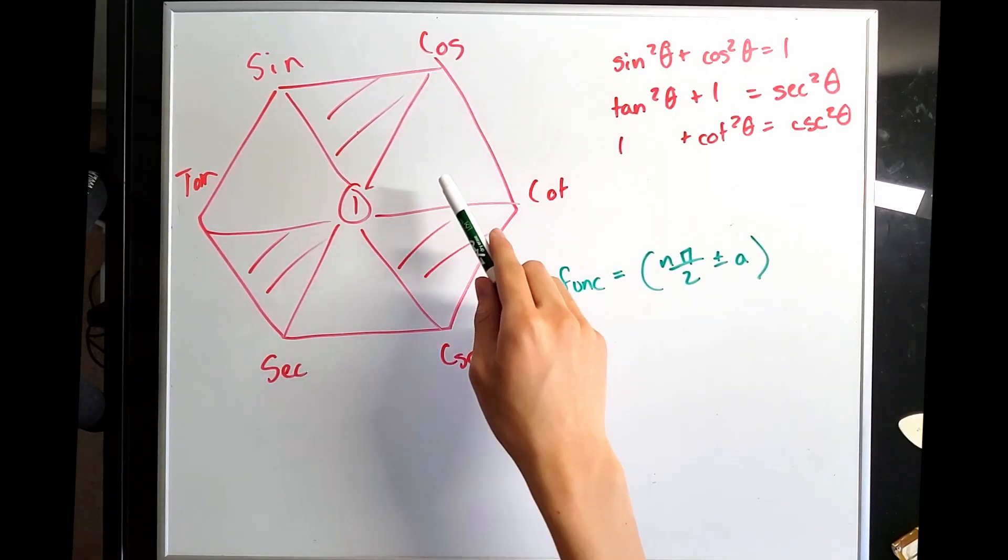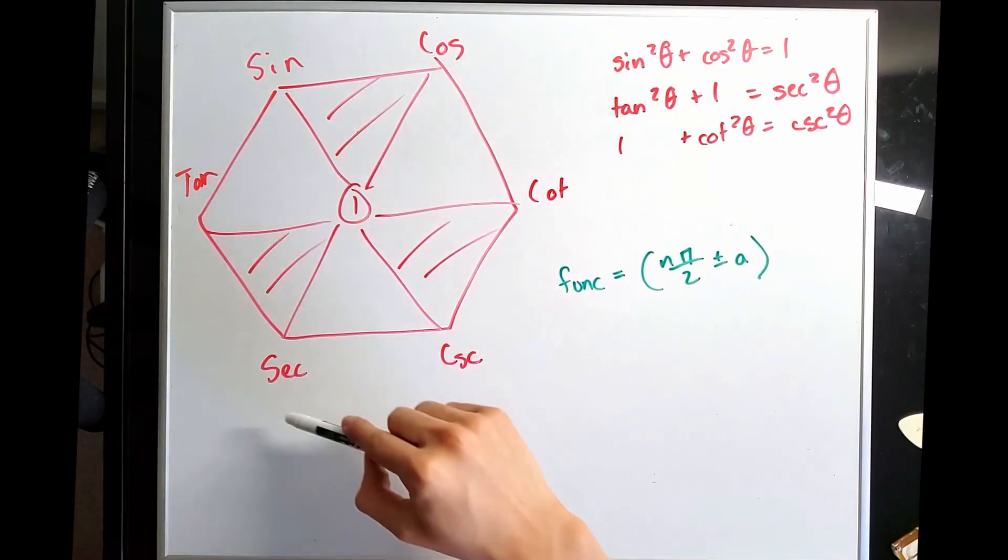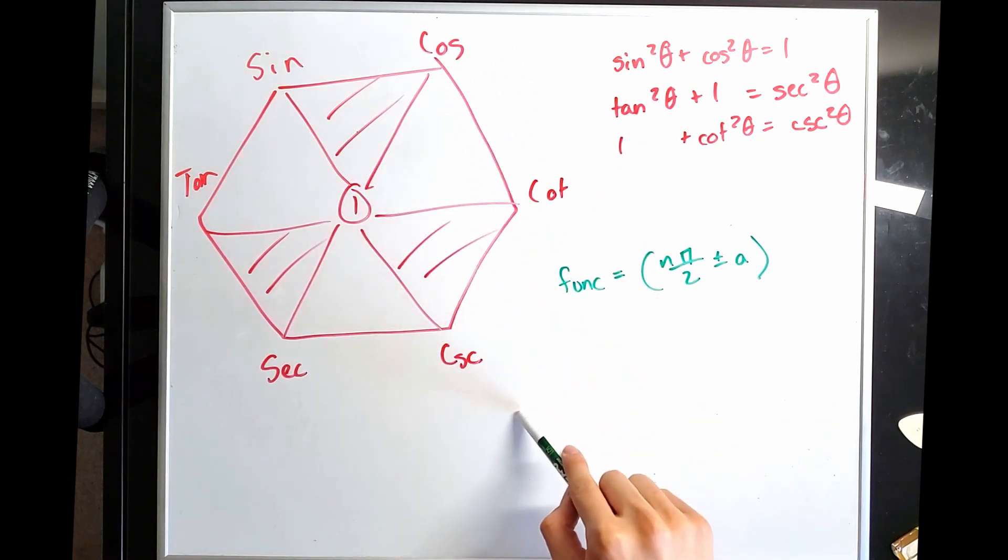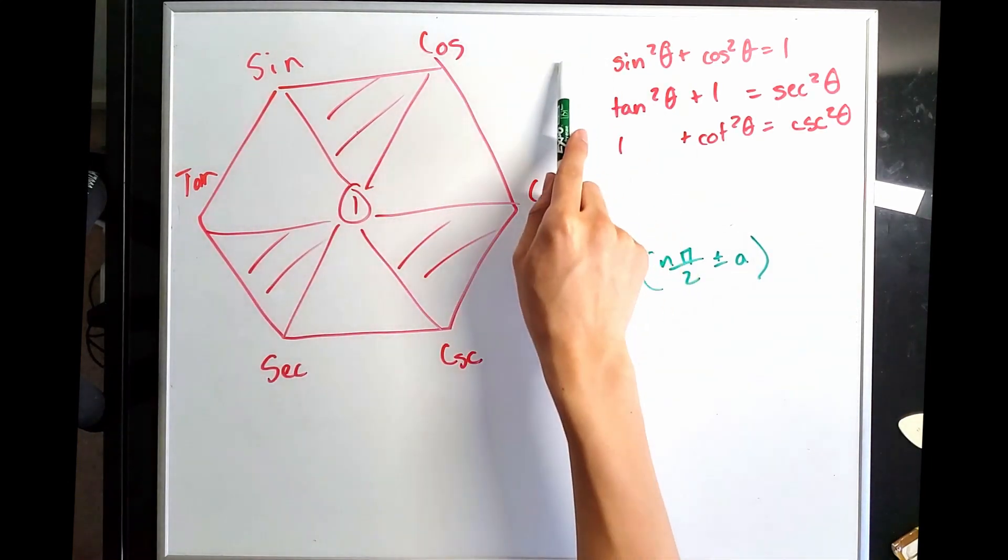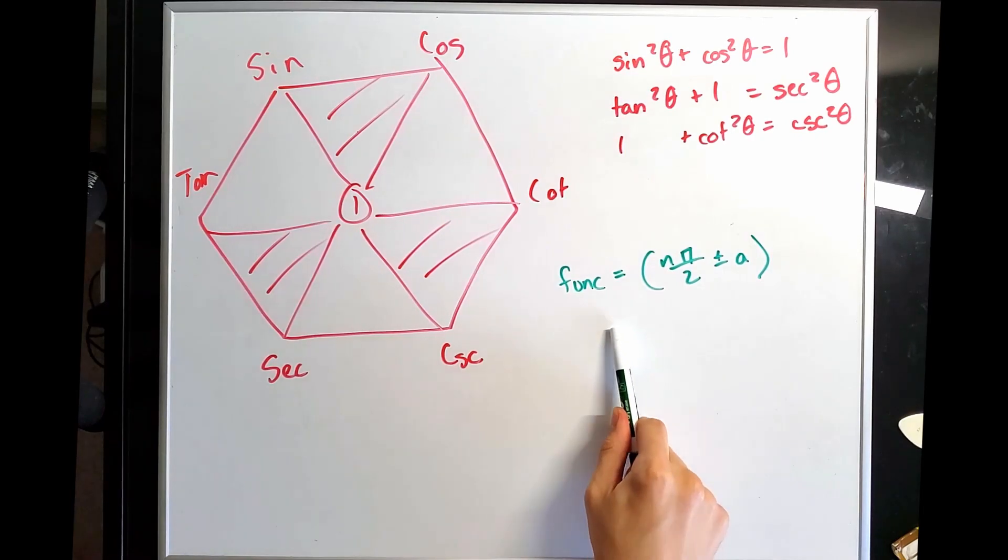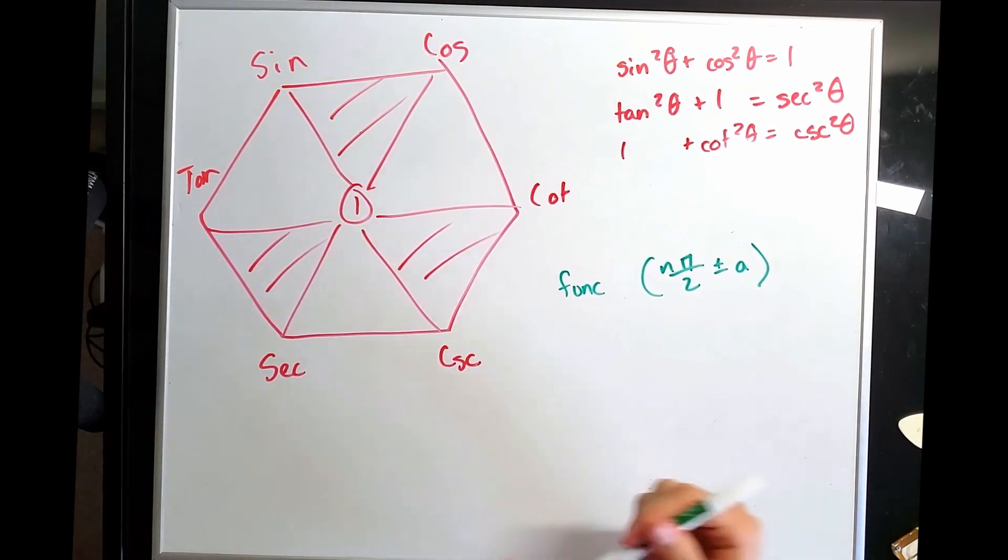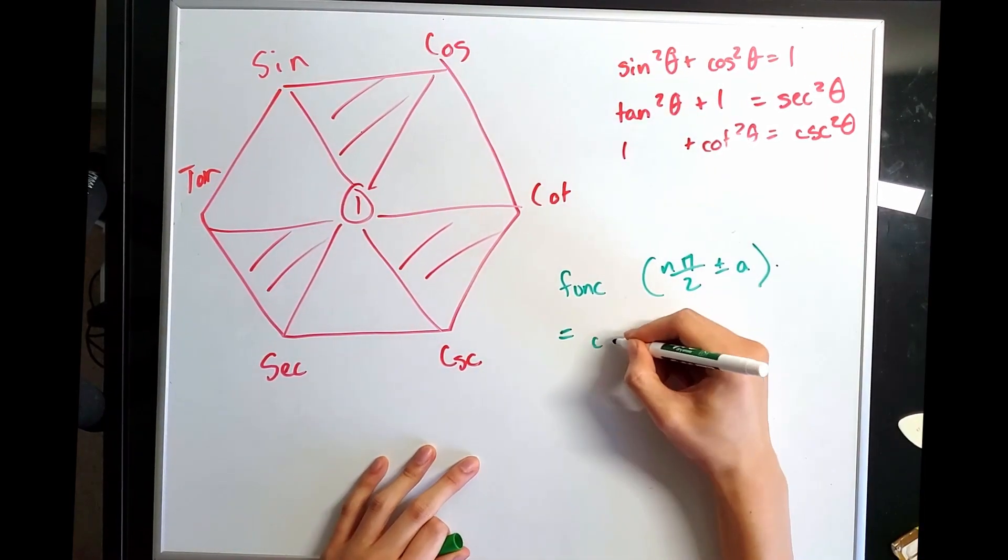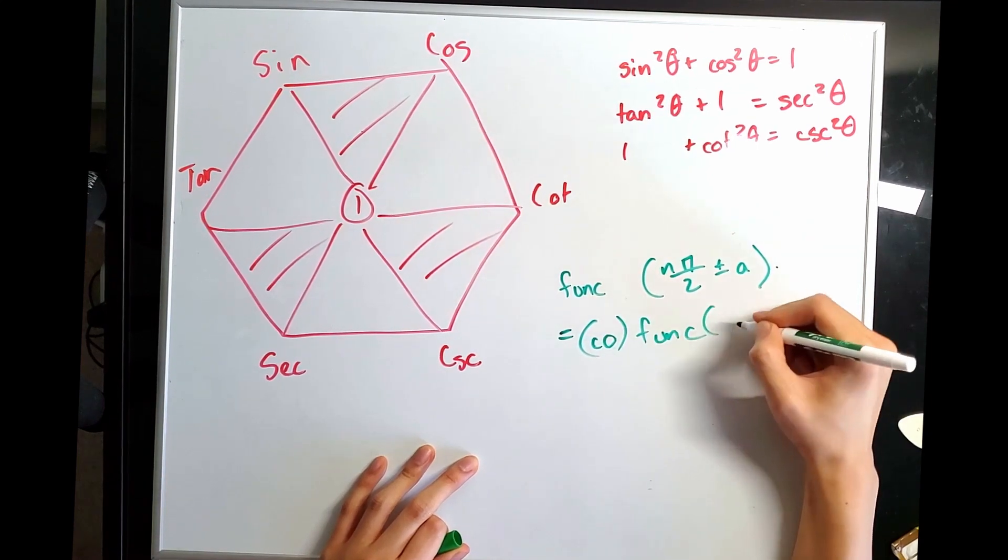Here's a hexagon of Pythagorean identities. They set up sine, secant, cosine, cosecant against each other and tangent and cotangent. In these triangles, you can find these equalities. Here's the reduction formula. So a function of this is equal to the co-function of just plain A.